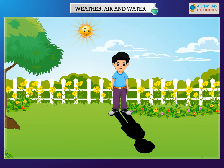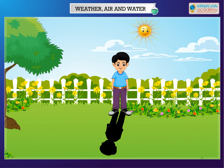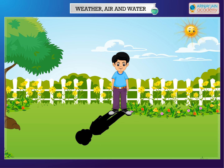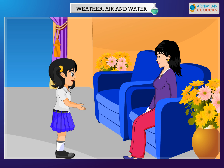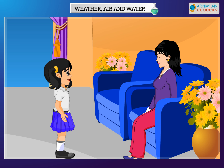But in the morning and evening, the rays of the sun are slanting, so the earth is not heated up much and it is not very hot. That's why the mornings and evenings are cooler than noon.